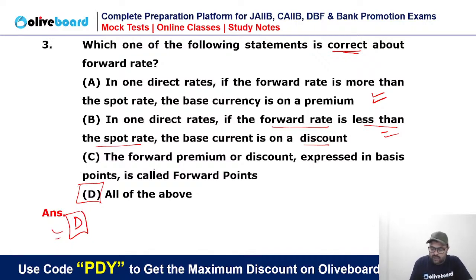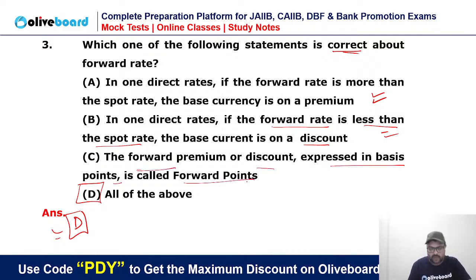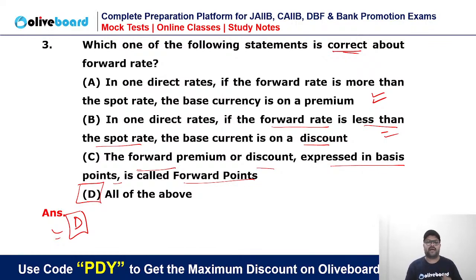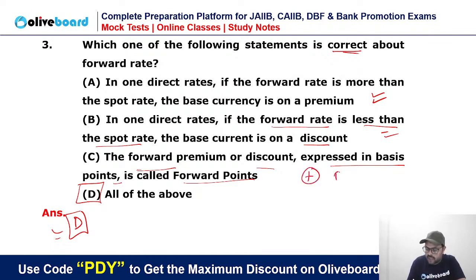The forward premium or discount expressed in basis points is called the forward point. If the exchange rates are positive, we call it premium. If the exchange rates are negative, we call it discount.